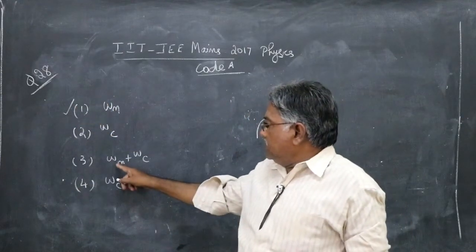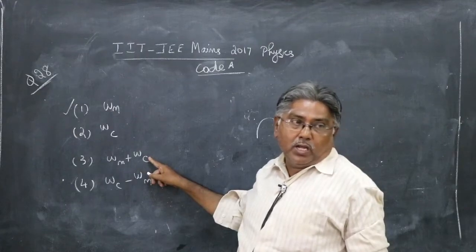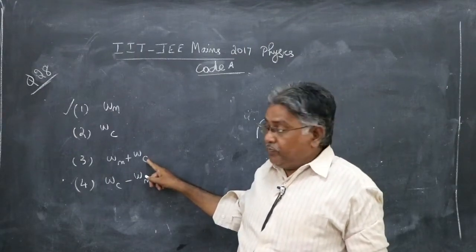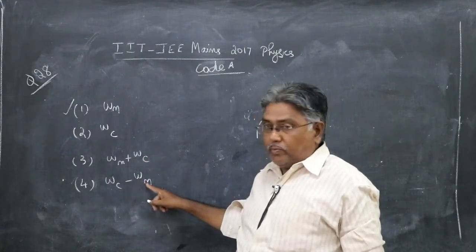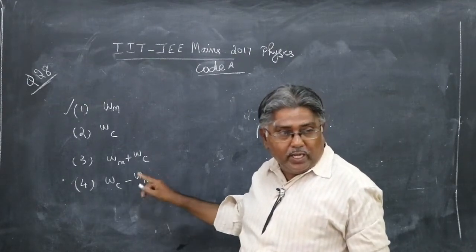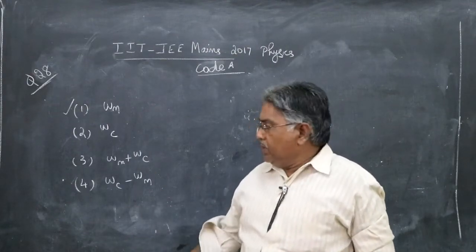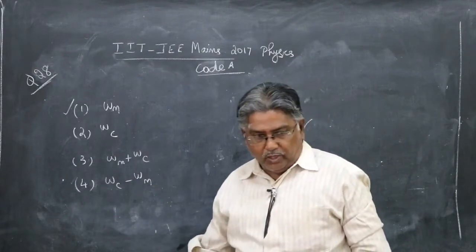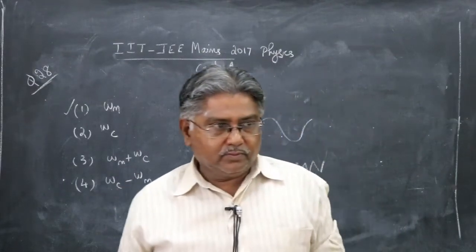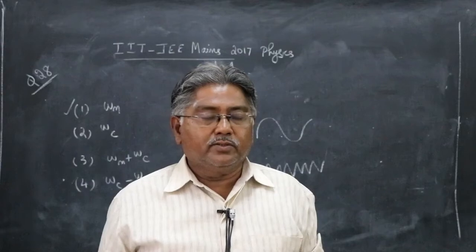In fact, this omega m plus omega c is called upper sideband frequency. Omega c minus omega m is called as lower sideband frequency. This is the original frequency of the carrier wave. Understood that? Thank you.